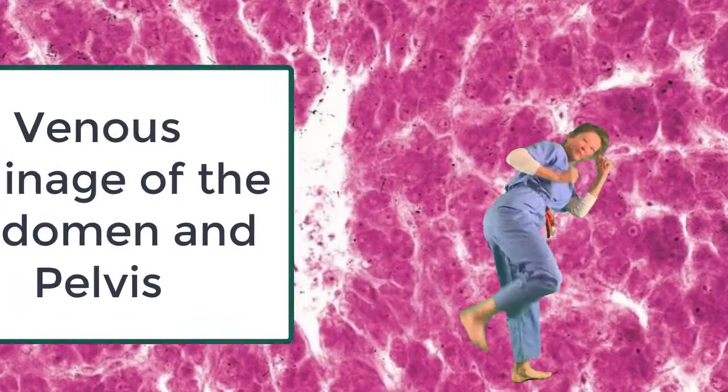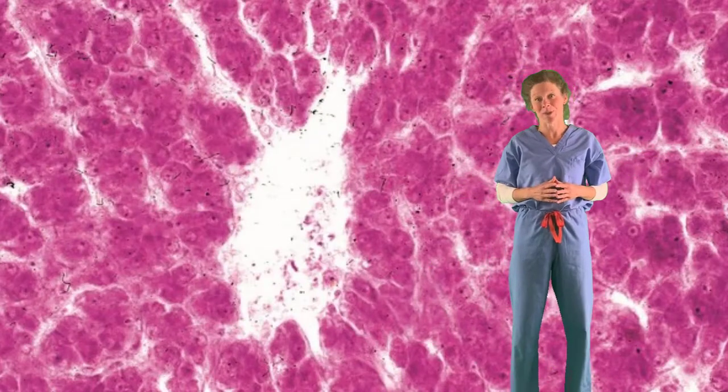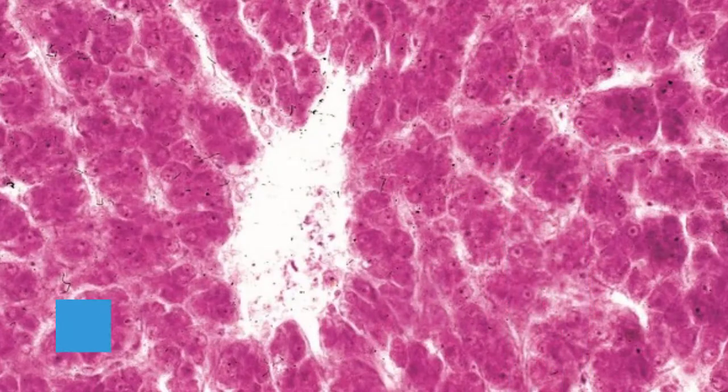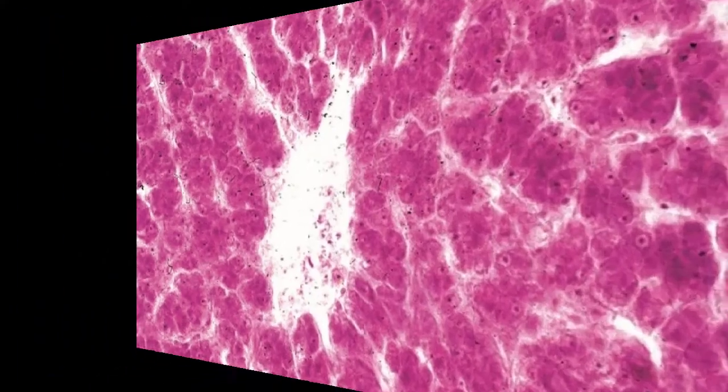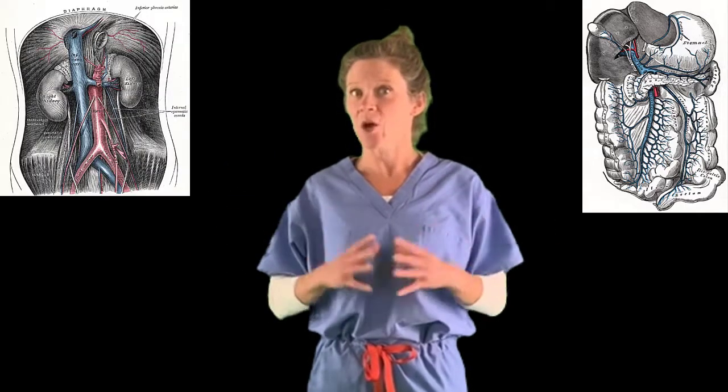Are you ready to knock out venous drainage from the abdomen and pelvis? Organs of the abdomen and pelvis drain via one of two routes, either via the portal system or via the caval system. This video will discuss both systems, highlighting the major veins that drain into each. Be sure to stick around to the end of the video when we discuss conditions associated with portal hypertension.